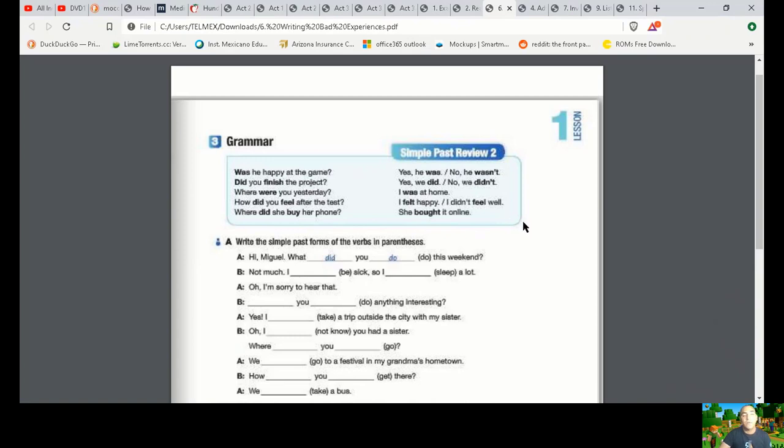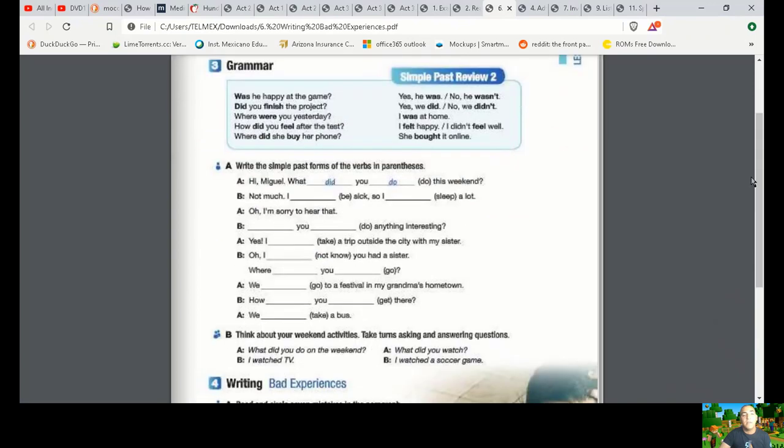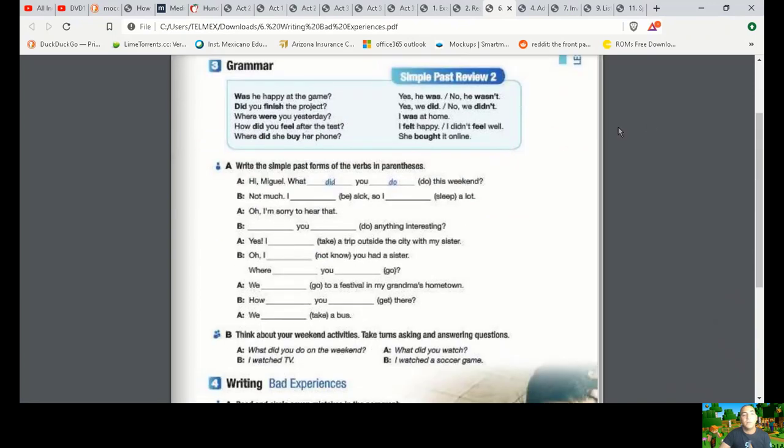Write the simple past form of the verb in parentheses. Hi, Miguel. What did you do this weekend? Not much. I was sick, so I was sleeping a lot. Oh, I'm sorry to hear that. Did you do anything interesting? Yes, I took a trip outside the city with my sister. Oh, I didn't know you had a sister. Where did you go? We went to a festival in my grandma's hometown. How did you get there? We got there by bus.